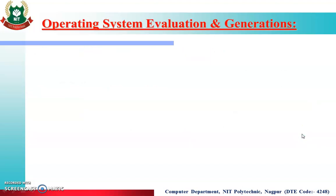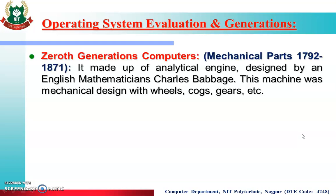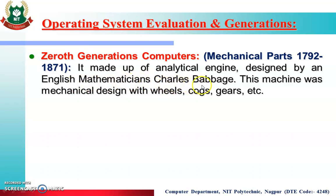Now, Operating System Evaluation and Generation. Basically there are four generations of our computer system. The first is the zero generation of computers, which existed between 1792 to 1871. This computer system was made from mechanical parts — an analytical engine designed by the English mathematician Charles Babbage. This machine was a mechanical design with wheels, fox gears, and could perform only basic calculations.